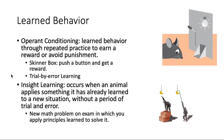The third type is operant conditioning — learned behavior through repeated practice to earn a reward or avoid punishment. Here you have a mouse and what is called Skinner's box. This is a trial-and-error type of learning. You push a lever and food comes out. They also use mazes with mice. The animals will understand that once you push that lever, you get some sort of reward, so they will do it more and more eventually.